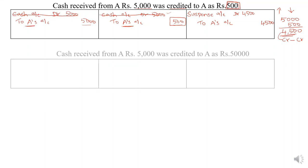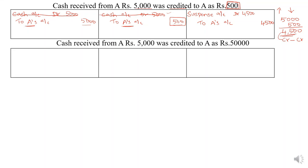The next transaction: cash received from A rupees 5,000 was credited as rupees 50,000 — same scenario but now we have to reduce the amount. Instead of 5,000, we recorded 50,000. The difference is 45,000 and we need to reduce the credit.